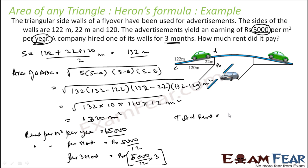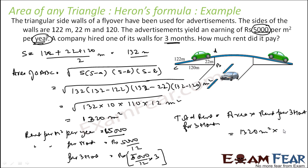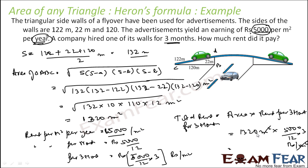Total rent for three months equals area multiplied by rent per three months per meter square. The area is 1320 m² and the rent rate is (5000 / 12) × 3 rupees per meter square. The meter square units cancel, and solving this gives ₹16,50,000 as the rent for three months.